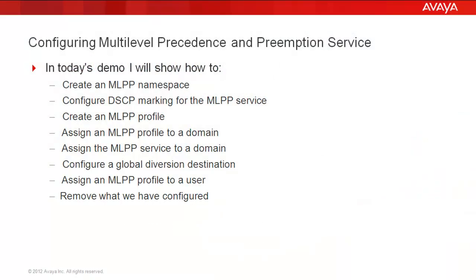In today's demo, I'll show how to create a multi-level precedence and preemptive service namespace, configure the DiffServ code point markings for the MLPP service, create an MLPP profile, assign the MLPP profile to a domain, assign the service to a domain, configure the global diversion destination, assign an MLPP profile to a user, and remove what we have configured.